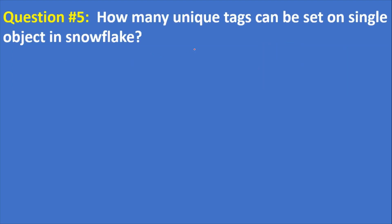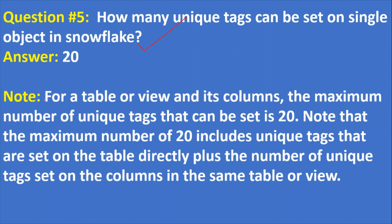Next question: how many unique tags can be set on a single object in Snowflake? The answer is 20. For a table or a view and its columns, the maximum number of unique tags that can be set is 20. Note that this maximum of 20 includes unique tags set on the table directly plus the number of unique tags set on the columns in the same table or view. The same tag can be set on a table and also on its columns.